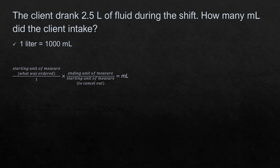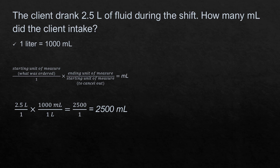The client drank 2.5 liters of fluid during the shift. How many milliliters did the client intake? We're converting liters to milliliters, and there are 1,000 milliliters in a liter from our conversion chart. Setting it up in dimensional analysis: the first part is our starting unit, 2.5 liters. We put liters on the bottom to cancel out, which leaves us with milliliters. Solving: 2.5 times 1,000 is 2,500, and 1 times 1 is 1 — so our answer is 2,500 milliliters.